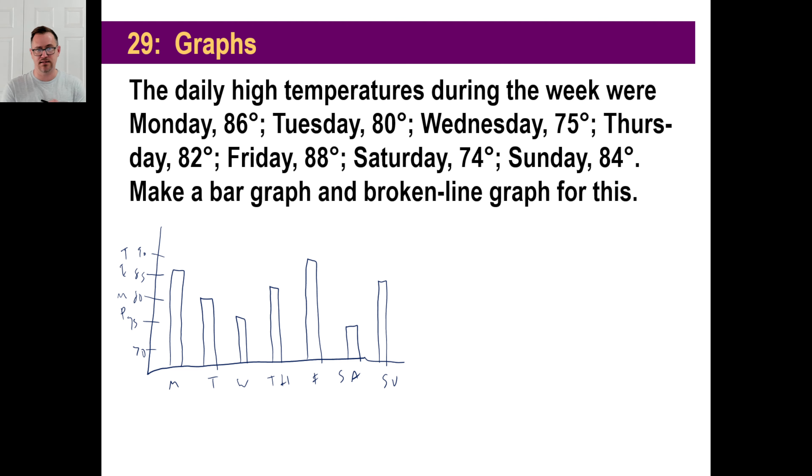A broken line graph would look exactly the same except for instead of having these bars, you would just do the points. So what was that? 86, Tuesday is 80, Wednesday's 75, Thursday 82 so it's up here, Friday I keep skipping Friday. Friday's up there, Saturday is 74, and Sunday is 84. So you would just do something like this, just connect the dots. That's the worst dot connecting in the history of humanity. Anyway, there's your bar graphs and your broken line graph for that.